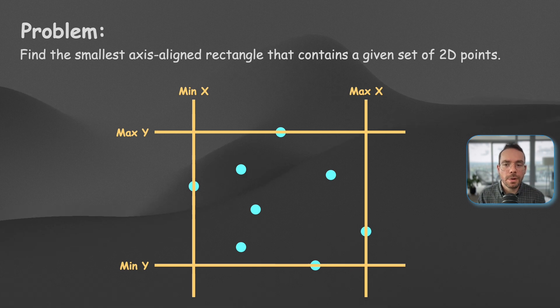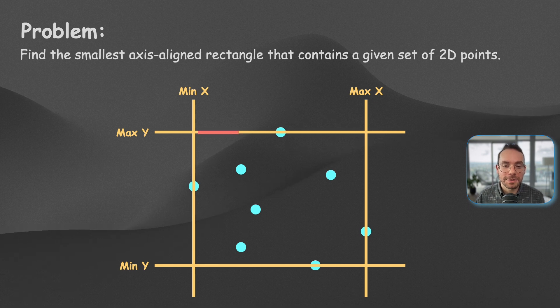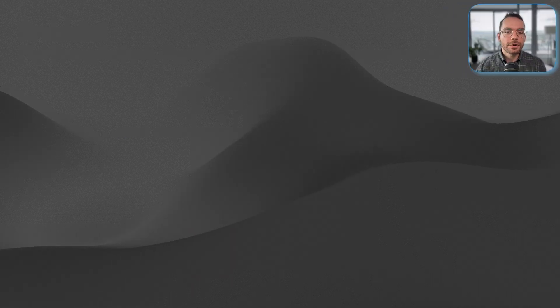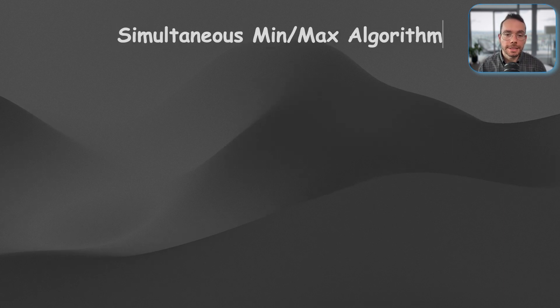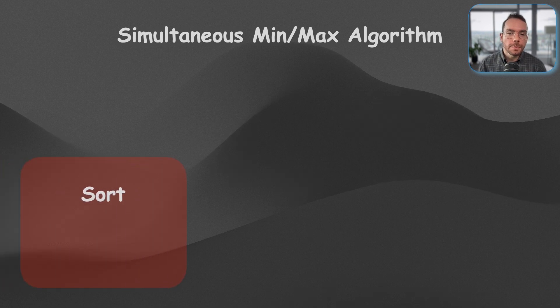But here's the question. What's the most efficient way to find the minimum or maximum values here? There are a few approaches that we can apply here to find simultaneous min and max. Well, the first approach would be sorting.